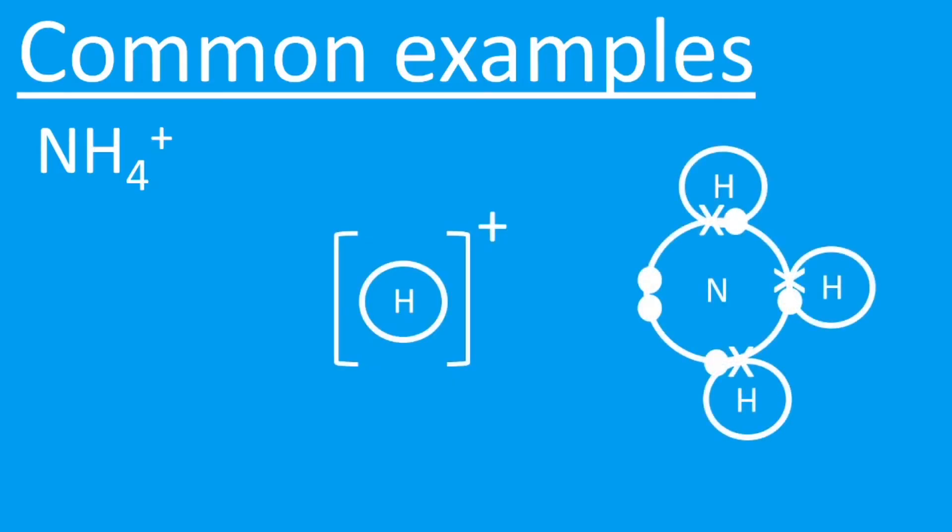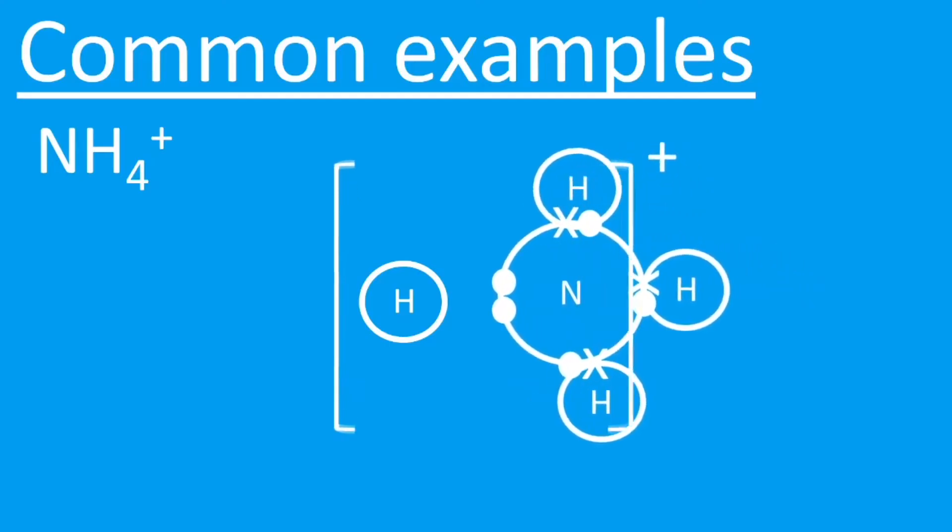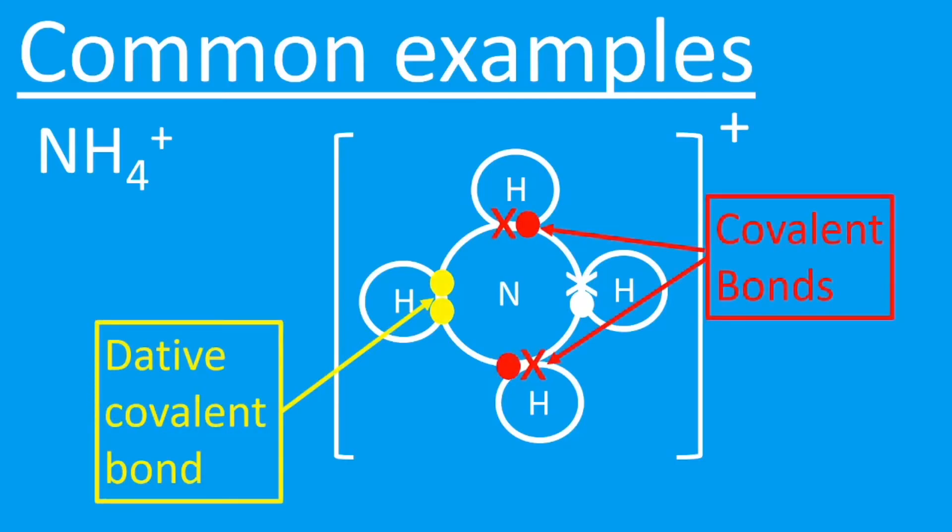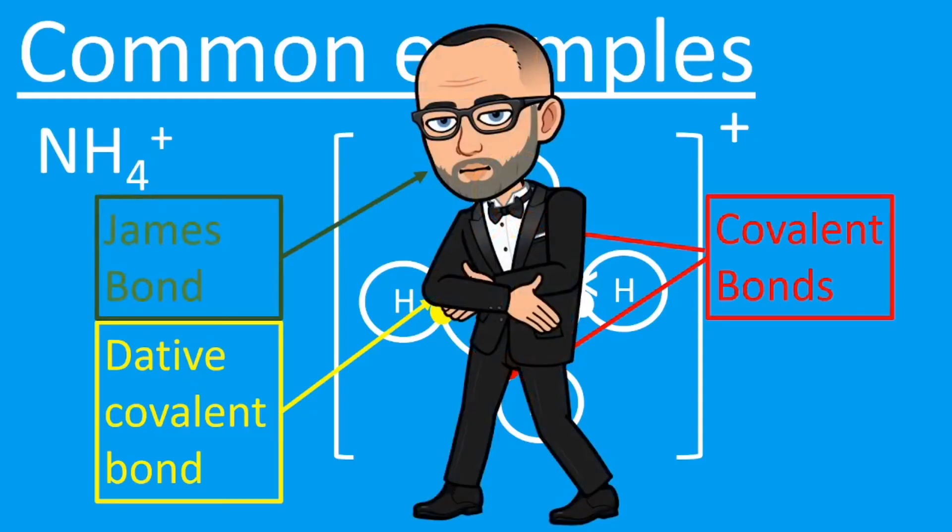That consists of an H+ and an NH3 molecule, and what's happening here is the two electrons on that NH3 have formed a bond with that H+. There's a dative covalent bond because both of those electrons have come from nitrogen. The other bonds are classed as covalent bonds.